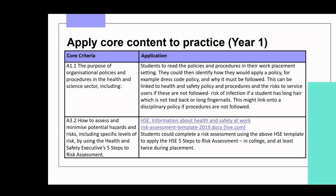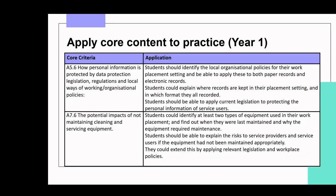For A5.6, regarding data protection legislation and ways of working, students identify their local organisational policies in their placement setting and explain where records are kept and in what format they are recorded. For A7.6, on maintaining, cleaning and servicing equipment, students identify two types of equipment used in their work placement, find out when they were last maintained, and explain why that equipment requires maintenance.